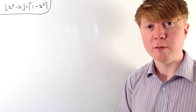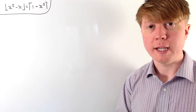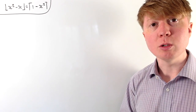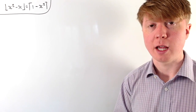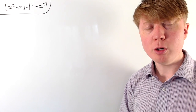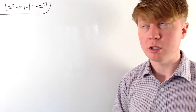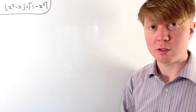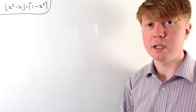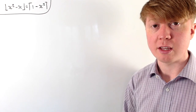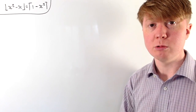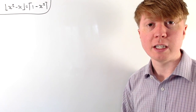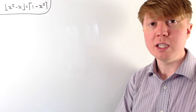We're going to solve this equation where we need to find all the values of x so that the floor function of x squared minus x equals the ceiling function of 1 minus x squared. For our approach, we'll start by considering the functions x squared minus x and 1 minus x squared without the floor and ceiling functions, look at what these look like together on a graph, and then take the ceiling and floor functions to find where they're equal.